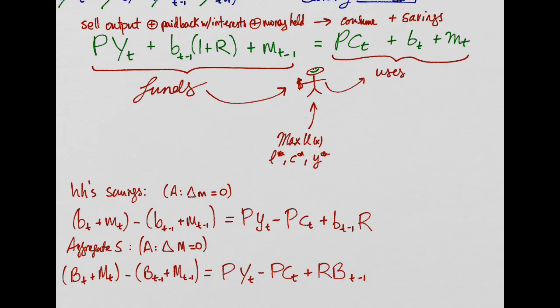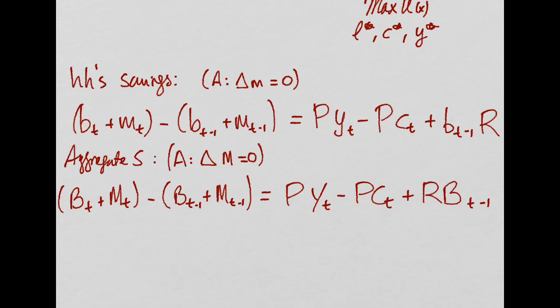So we're rearranging to solve for households' savings. This minus this is equal to this minus this. And we assume that the individual's holdings of money are constant.